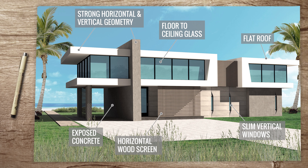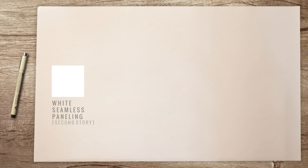We have the exposed concrete here — exposed concrete is a very common feature in modern design. Strong horizontal and vertical geometry is very common as well. You can see the cantilevers all along the house, which is also a common feature — a cantilever is when the second floor overhangs the first floor. Then I have the paneling system on the first floor.